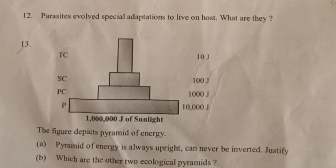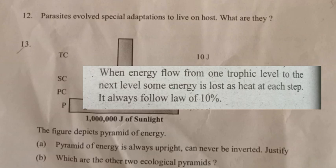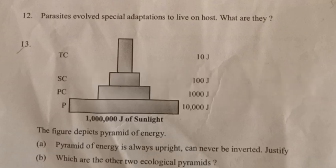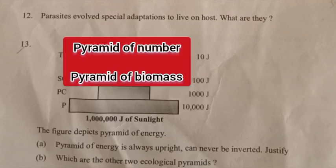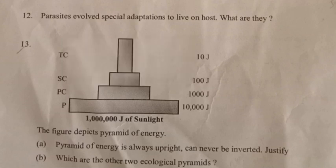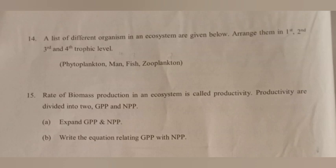Question 13: The figure depicts a pyramid of energy. A pyramid of energy is always upright and can never be inverted — justify. Answer: When energy flows from one trophic level to the next, some energy is lost as heat at each step. It always follows the 10 percent law. B: Which are the other two ecological pyramids? Answer: Pyramid of number and pyramid of biomass.